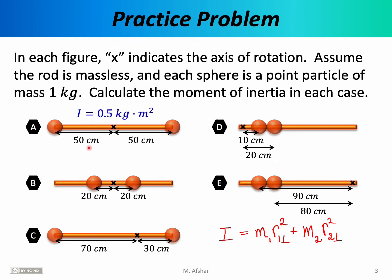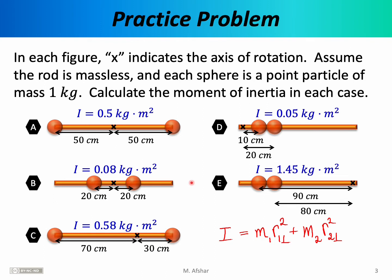Using this formula for object A, I find that its moment of inertia is 0.5 kg·m². For object B it is 0.08, for object C it is 0.58, object D is 0.05, and object E is 1.45 kg·m². Based on these numbers, scenario D is the easiest to rotate, whereas scenario E is actually the most difficult to rotate — it has the largest moment of inertia.